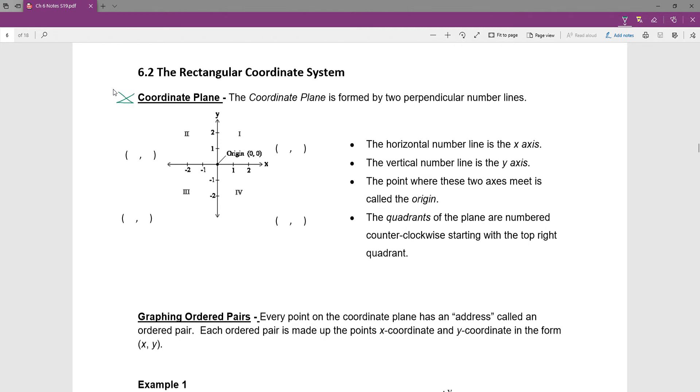And so this might be something that you've seen before. 6.2 is on the coordinate plane, on the coordinate system. It's on like graph paper, if you will. Oftentimes people think of it as like battleship coordinates because what we're doing is talking about locations on a graph.